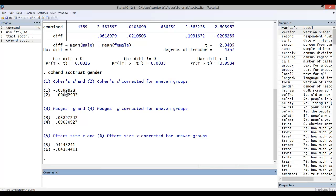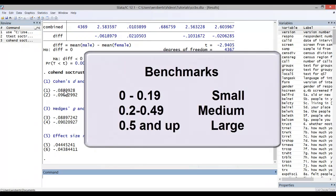Second, there are standard benchmarks we can use in describing Cohen's d. Zero to 0.19 in absolute value is considered a small effect. 0.2 to 0.49 is considered a medium effect. And 0.5 and above is considered a large effect.